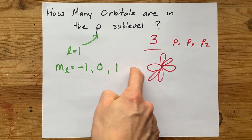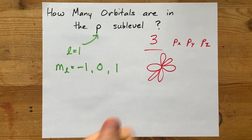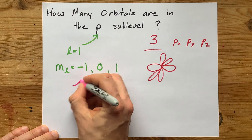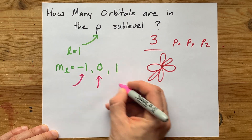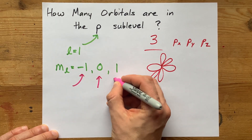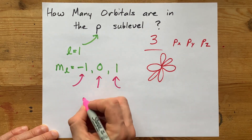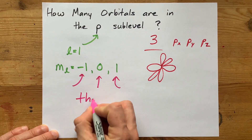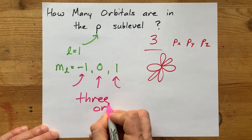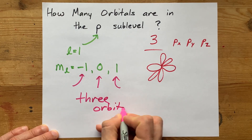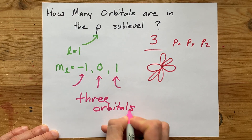It's each of these ml values that represent an orbital — maybe that one's px, that one's py, and that one's pz. The point is that that is three orbitals.